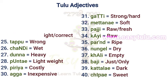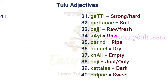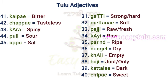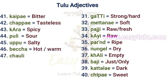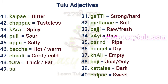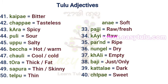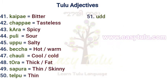Cheap. Sweet. Kaip — Bitter. Chapp — Tasteless. Karan — Spicy. Puli — Sore. Pupu — Salty. Beccia — Hot or Warm. Chouli — Cool or Cold. Tora — Thick or Fat. Sapura — Thin or Skinny. Telpu — Thin. Udda — Tall or Lengthy. Kudya — Short.